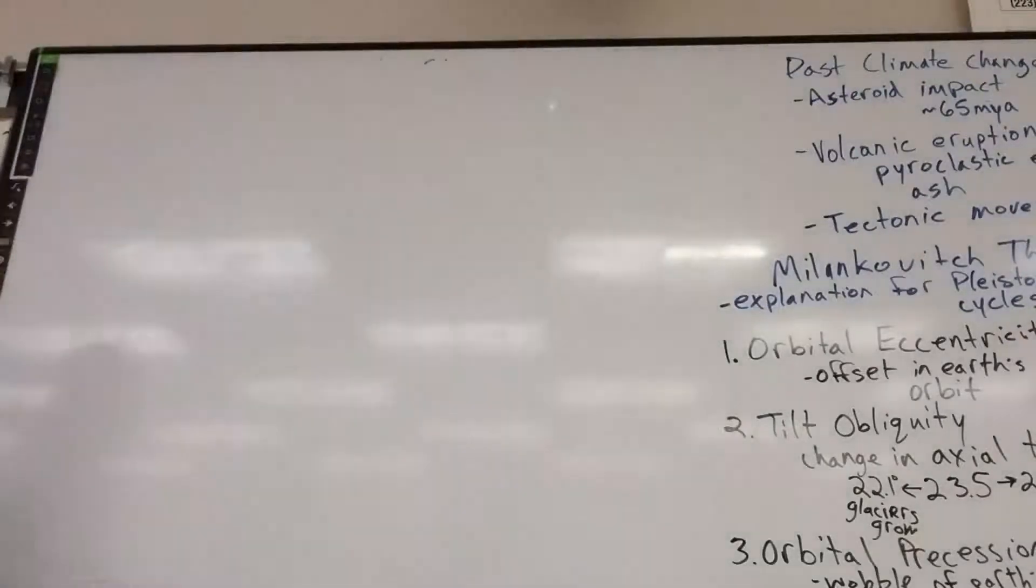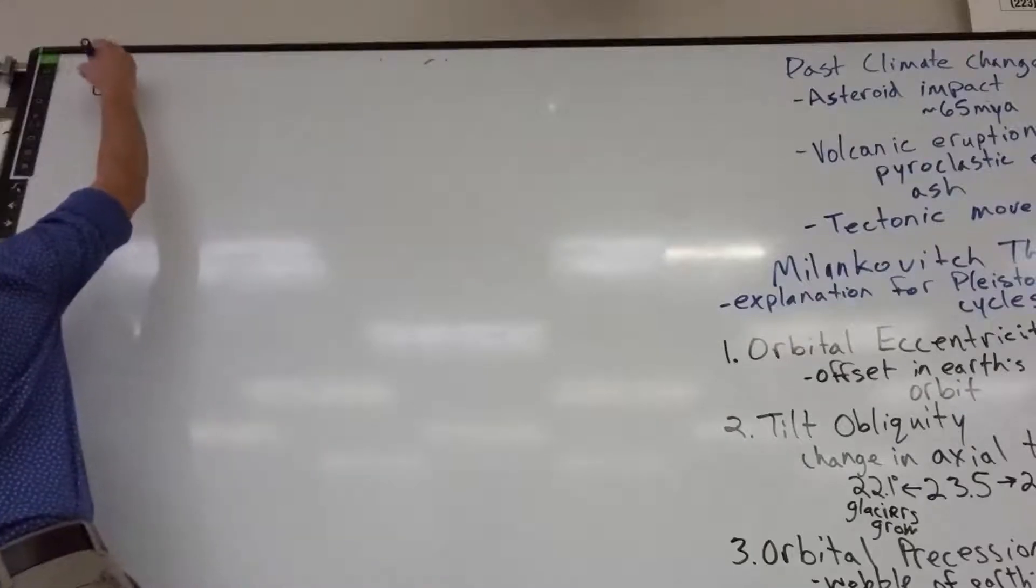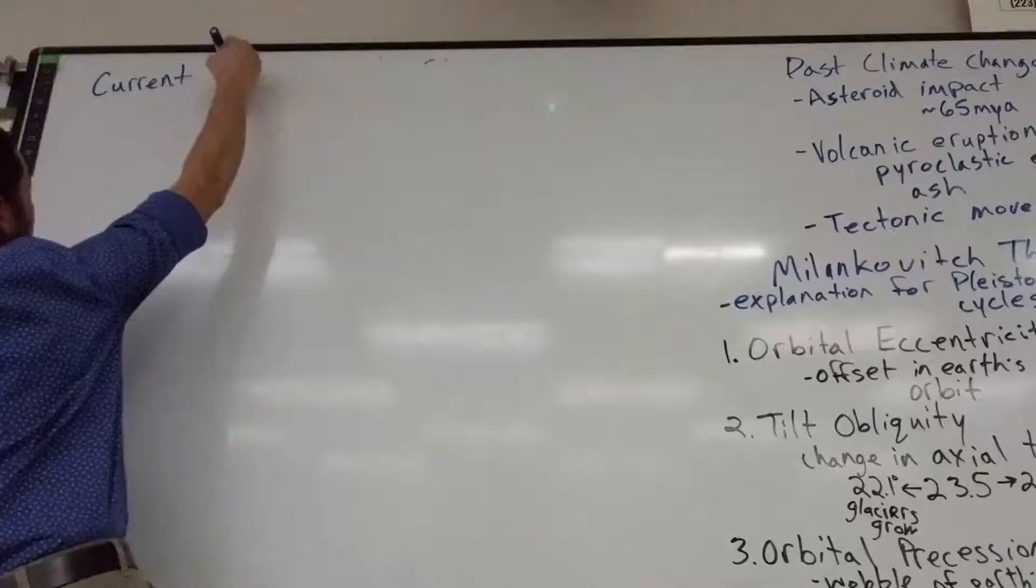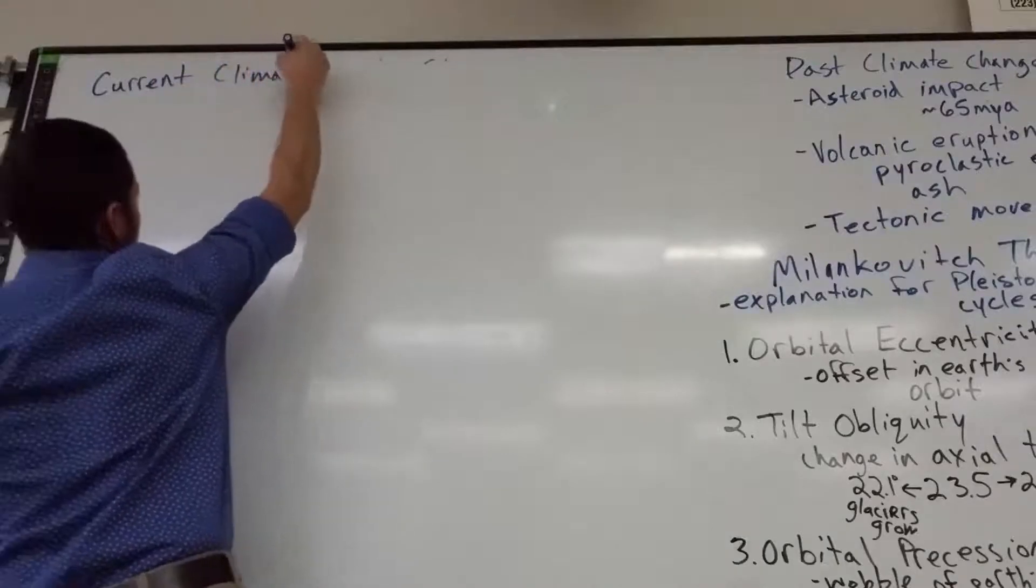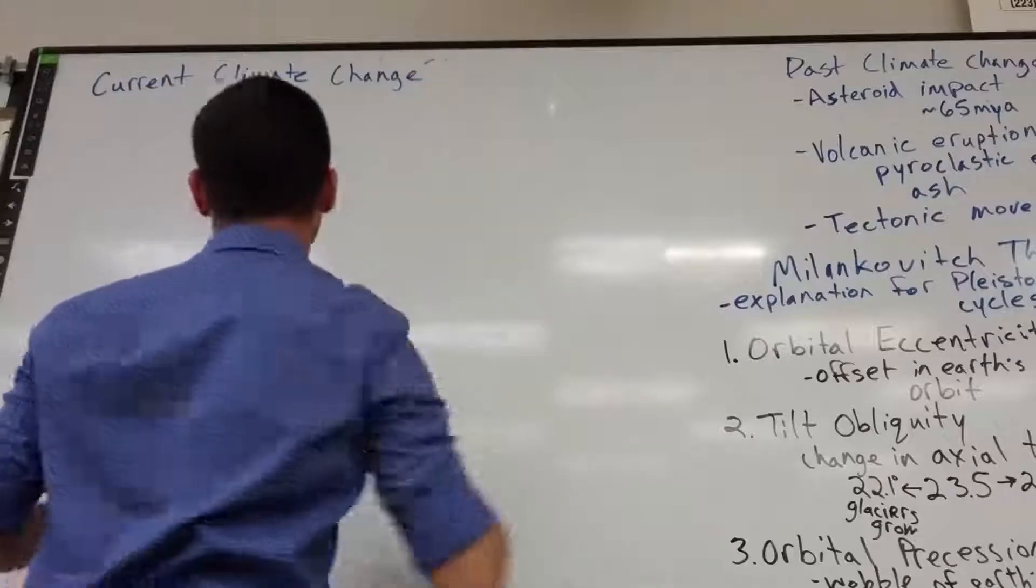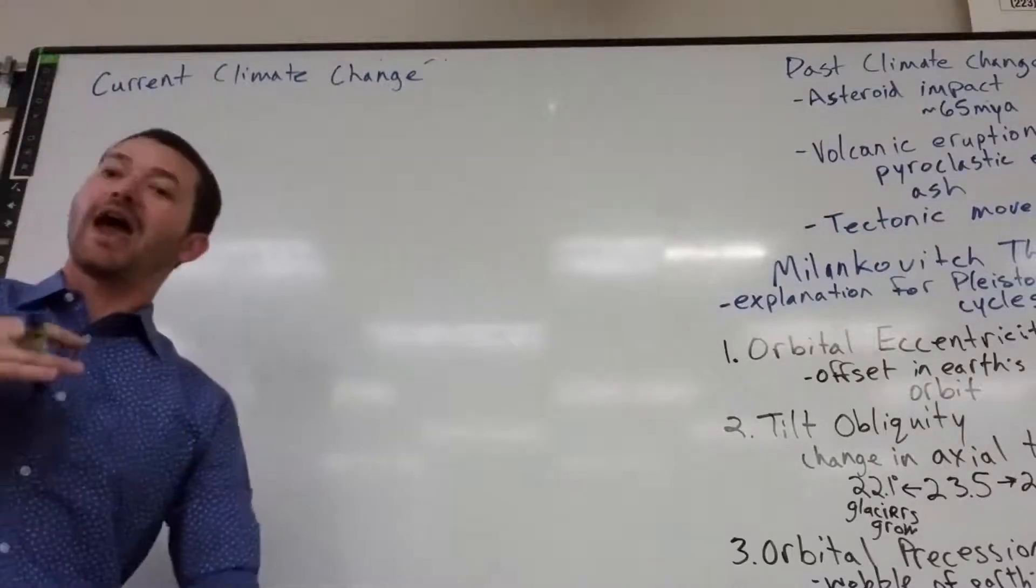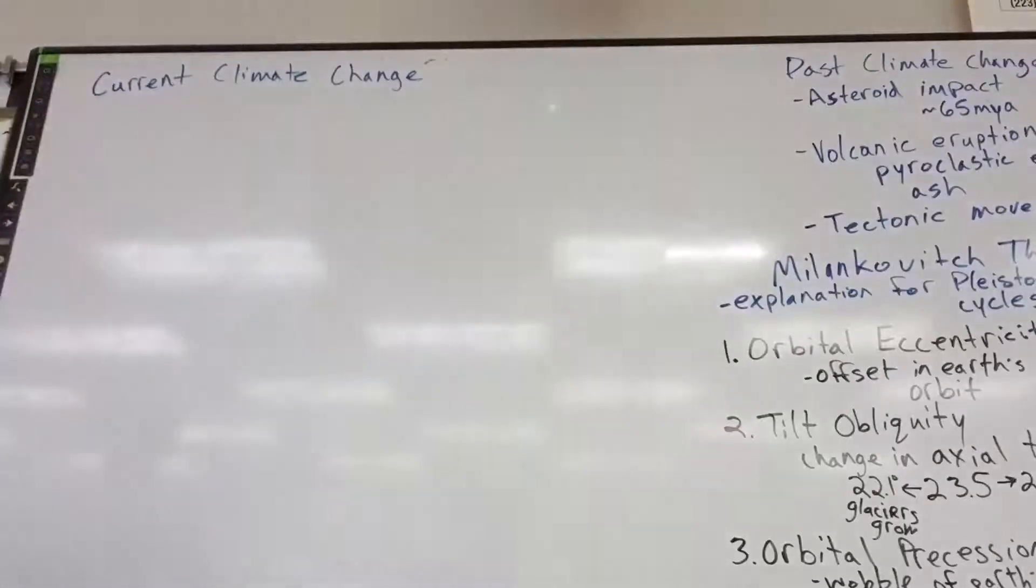And something that we can identify specific reasons for warming or changes in Earth's climate. So, current climate change. We've identified that the major influence that humans have on Earth's climate and atmosphere has to do with the carbon cycle.